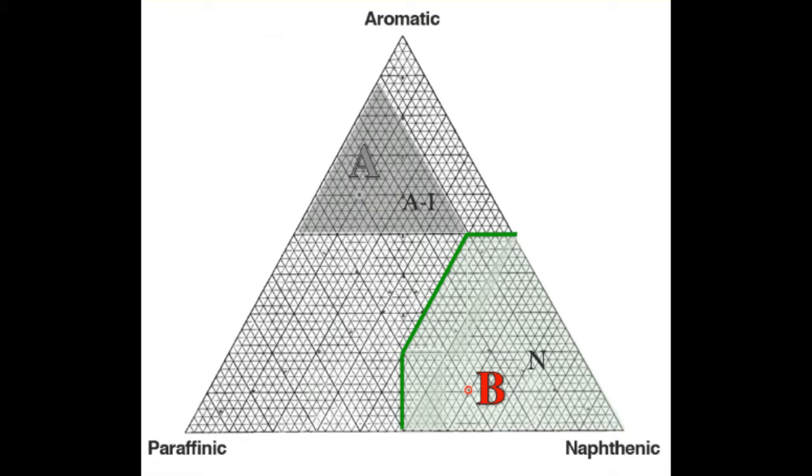Now let's place crude B on this diagram. Crude B has 10% aromatics and 60% naphthenes. Let's first find the 10% aromatics line right across from the aromatics corner, the line that is parallel to the line combining paraffinic and naphthenic corners. That's the major tick line, 10% from the bottom of the diagram. So on this line, all the points will have 10% aromatics. Now let's find the other line so we can place crude B on this 10% aromatics line.